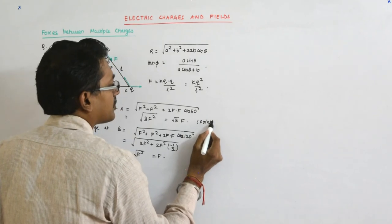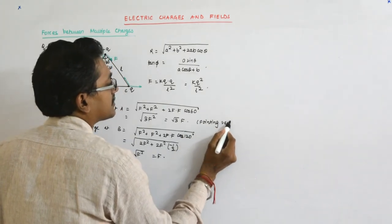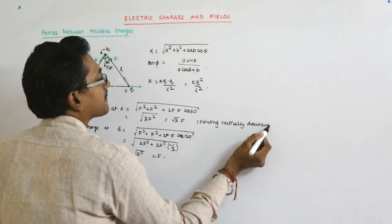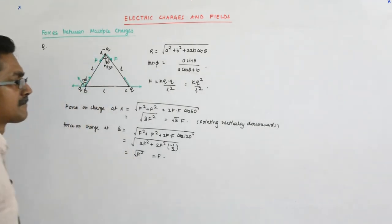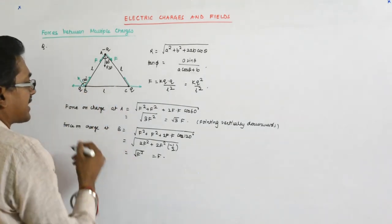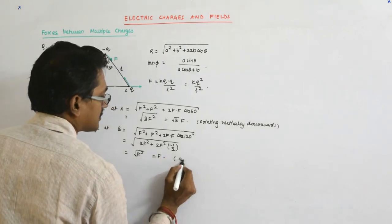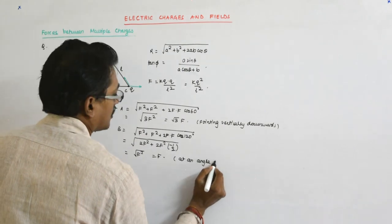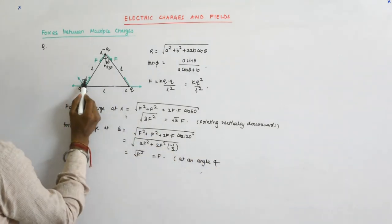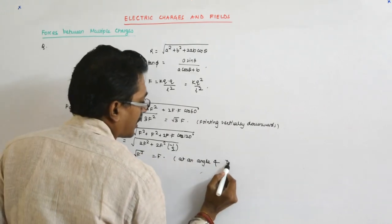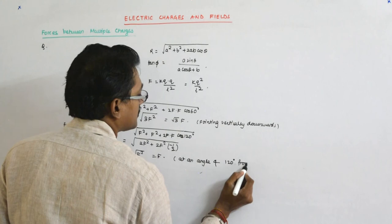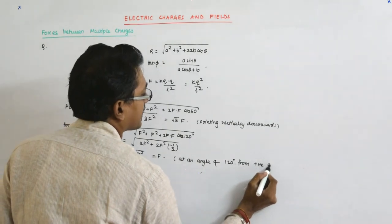This is pointing vertically downwards. You will have to tell that. This is making an angle - this is how much? This is 60 and this is 60. 60 degree or 120 degree from positive direction of x axis.